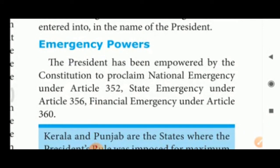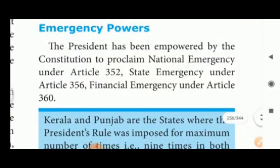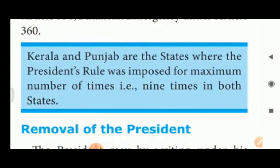Emergency powers: The President has been empowered by the Constitution to proclaim national emergency under Article 352, state emergency under Article 356, and financial emergency under Article 360. Kerala and Punjab are the states where President's Rule was imposed for the maximum number of times — nine times each.